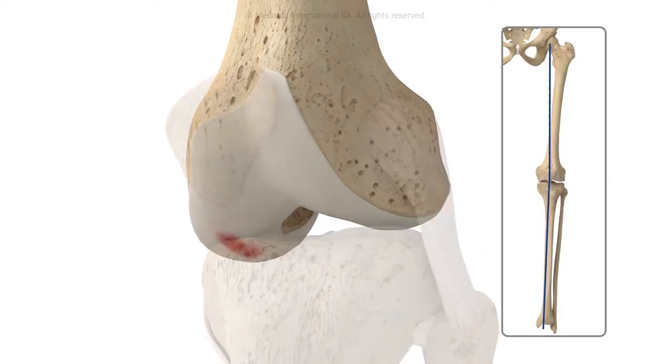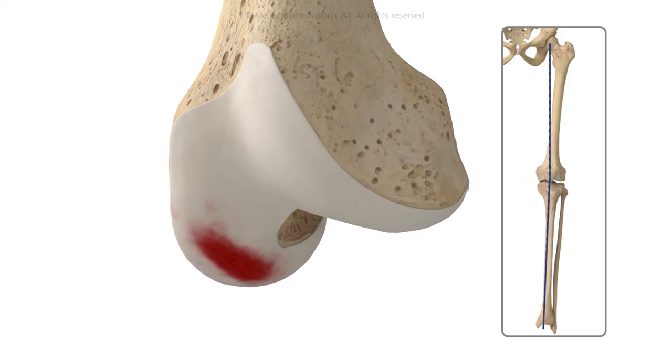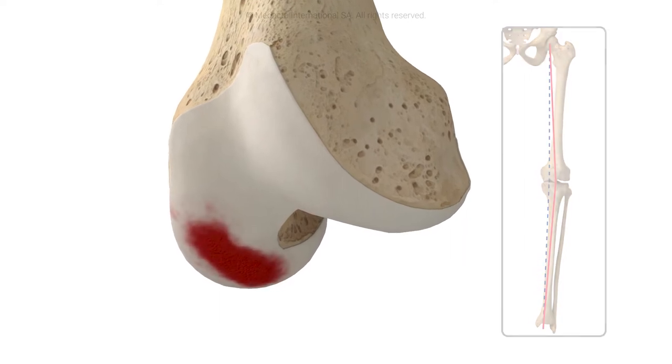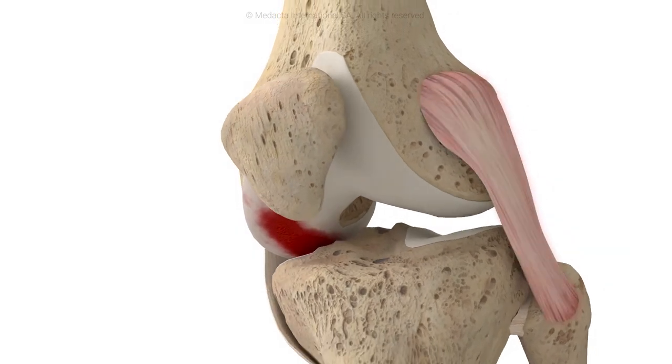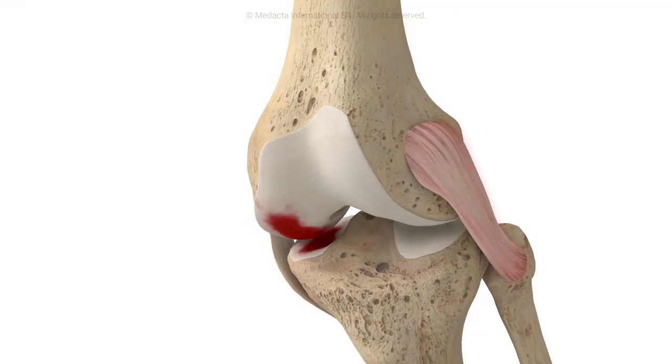Osteoarthritis can damage the cartilage layer on the femur and tibia and lead to degeneration, leading to varus or valgus alignment which alters the kinematics of the knee and the tension of the collateral ligaments.